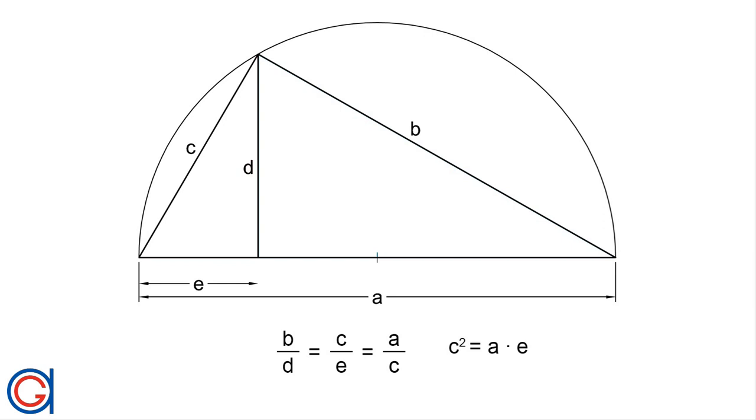So here we have demonstrated how the leg geometric mean formula comes about. If we simplify the equation by solving for C, we can see that C is equal to the square root of A times E, and this formula is very useful in geometry in general.